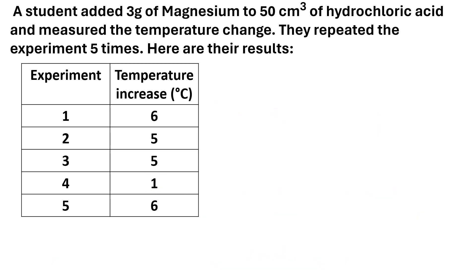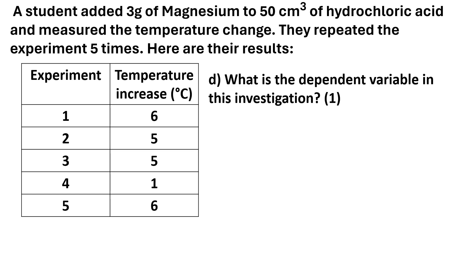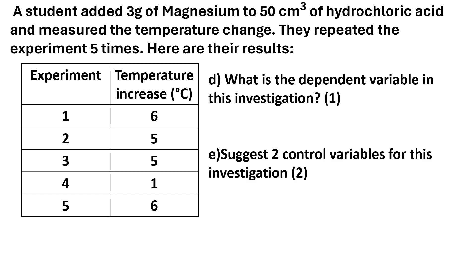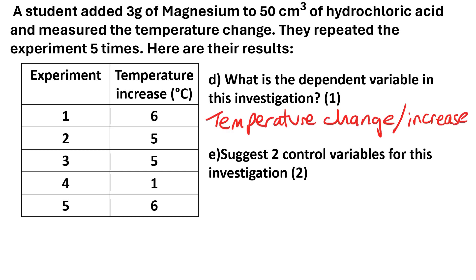Keeping with the same question, Part D: what is the dependent variable in this investigation? The dependent variable is the one you're observing and writing down in your results table each time you do the experiment. In this case, it's the temperature change or the temperature increase.